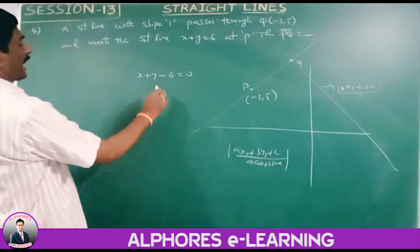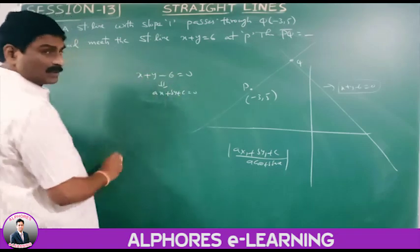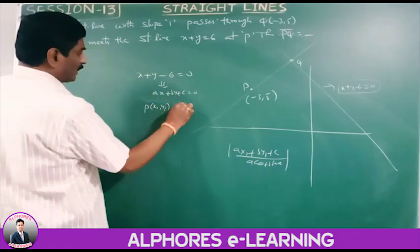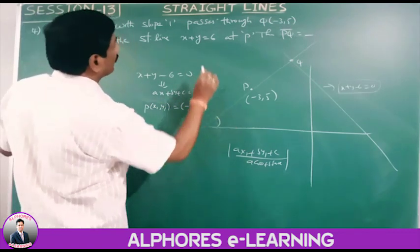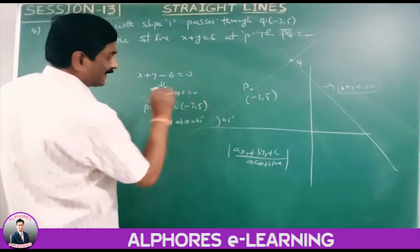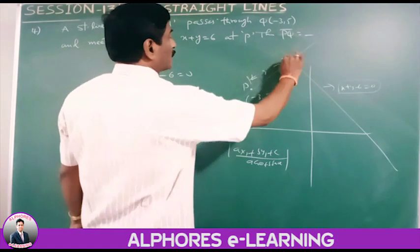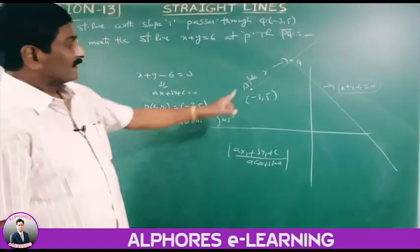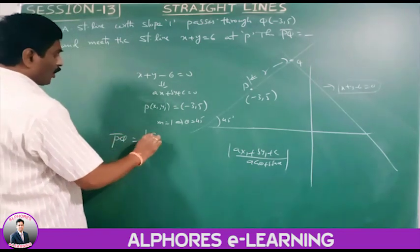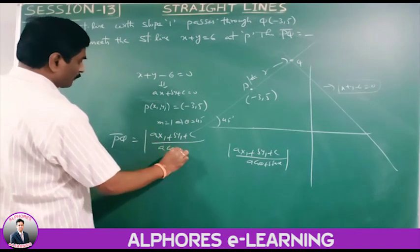Applying the formula: the line is x plus y minus 6 equals 0, and the point is Q(minus 3, 5). So ax1 plus by1 plus c equals minus 3 plus 5 minus 6 equals minus 4. The denominator is 1·cos(45) plus 1·sin(45) equals 1/root(2) plus 1/root(2).